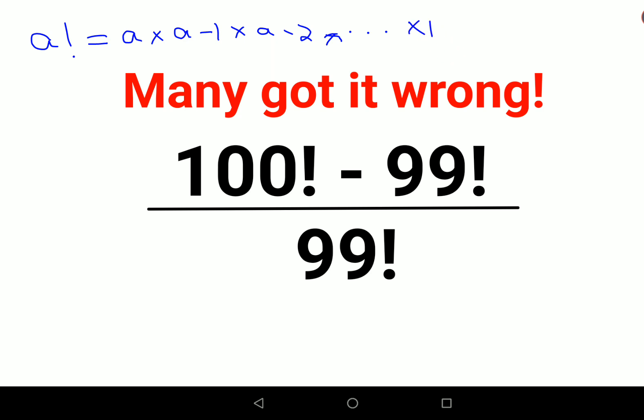Here also, I can write this 100 factorial as nothing but 100 into 99 into 98, going on up to 1. Similarly, 99 factorial can be written as 99 into 98, going on up to 1.